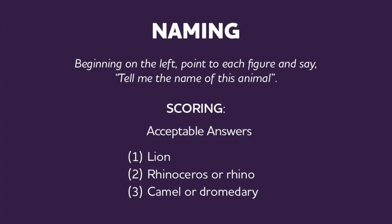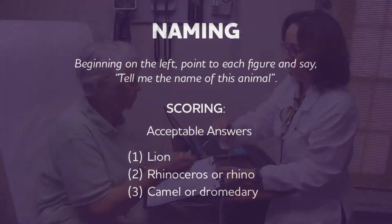For the naming task, begin on the left, point to each figure, and say, 'Tell me the name of this animal.' Acceptable answers include: for the first, lion; for the second, rhinoceros or rhino; for the third, camel or dromedary is acceptable.